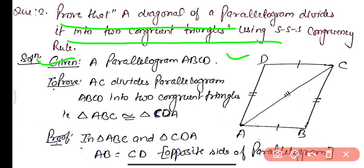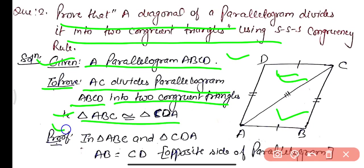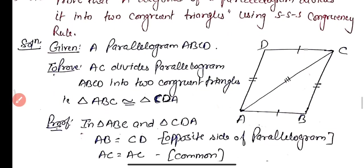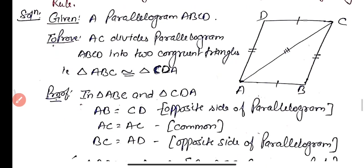We are given parallelogram ABCD. We need to prove that AC divides the parallelogram ABCD into two congruent triangles — that is, triangle ABC is congruent to triangle CDA. In triangle ABC and CDA, AB equals CD as opposite sides of the parallelogram.